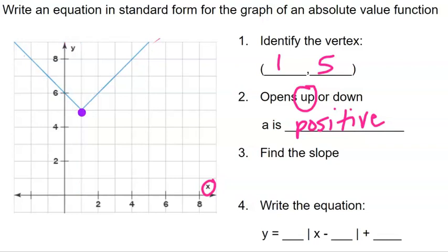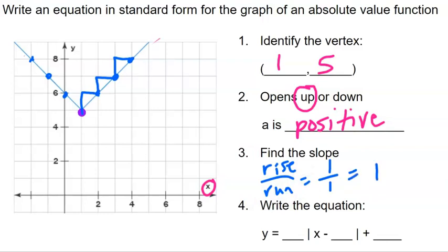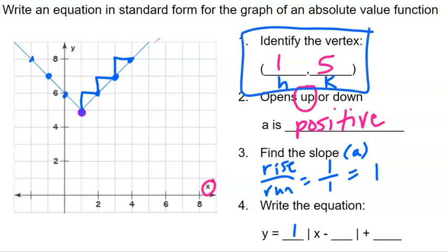Now we find the slope of our graph — how much we rise and run each time. Adding extra points can be helpful. Each time we're going up one over one, so that rise over run is one over one, which is just a slope of one. To write this equation: Y equals our A value, which is one, times the absolute value of X minus one, plus five. That is how we write our absolute value equation.